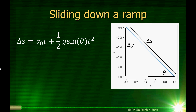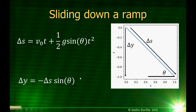Notice, if I have a ramp and it drops a certain amount delta y, I can write delta s or delta y in terms of each other. Why would I want to solve this problem using delta y instead of delta s? It turns out things are going to work really nicely when you use delta y. So delta y — the change in y — y goes down as we increase s, as we move along the ramp. So delta y is just negative delta s times sine of theta.